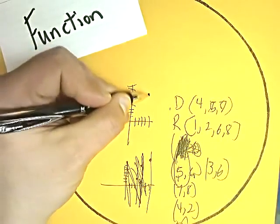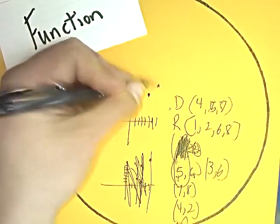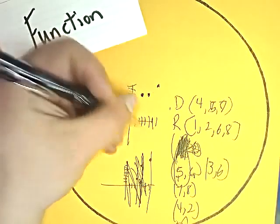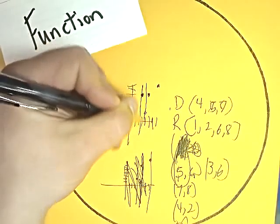So here's 5 and 6. Here's 7 and 8. Here's 3 and 6. And here's 4 and 2. In this case, everything works out fine.